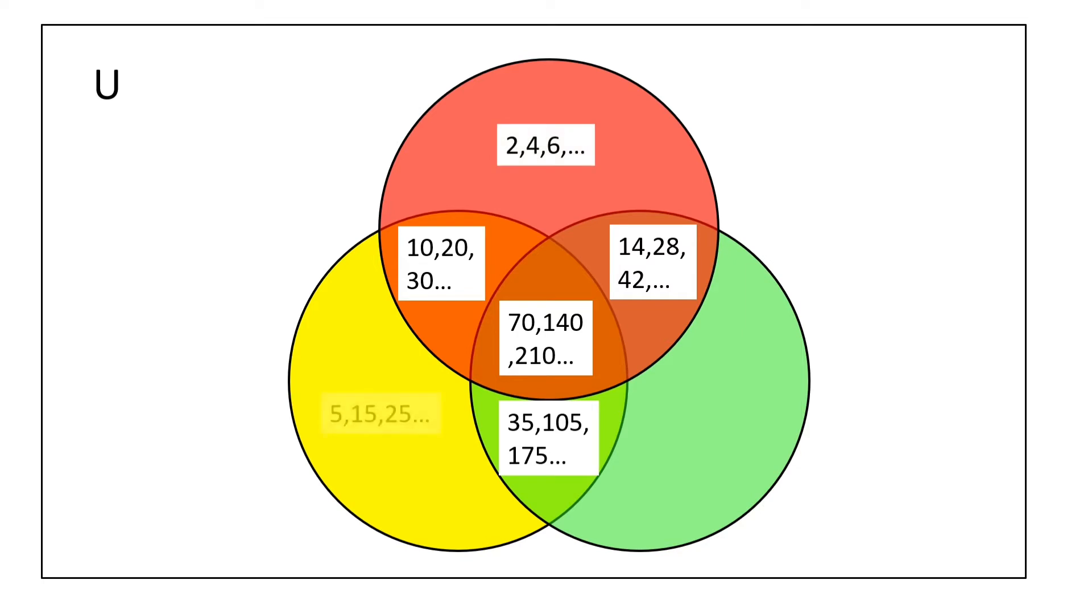70, 140, etc. are not written because they are already in the dark brown part. The rest of the multiples of 2, 5, and 7 are written in red, yellow, and light green parts respectively.